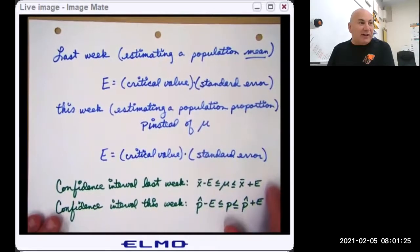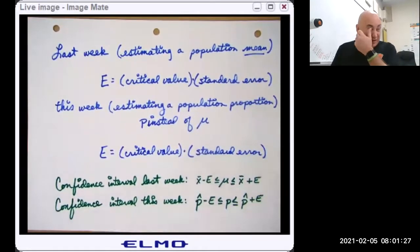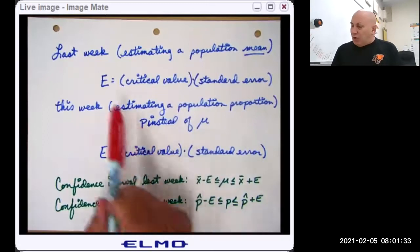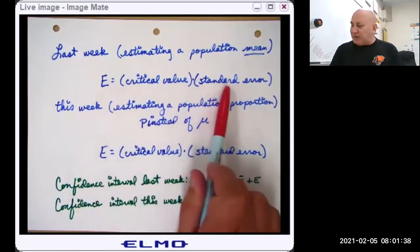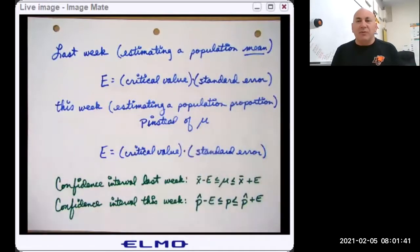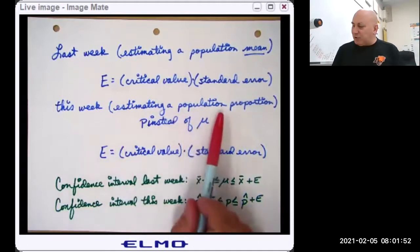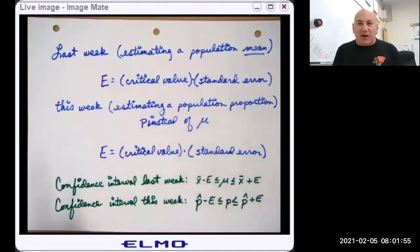So previously, when we estimated a population mean with a confidence interval, our margin of error was a critical value times a standard error. It was Z critical times sigma over root N, or it was T critical times S over root N. Now we're going to estimate a population proportion. We're going to use P instead of mu. Do not confuse those letters. Mu is a mean. P is a proportion.